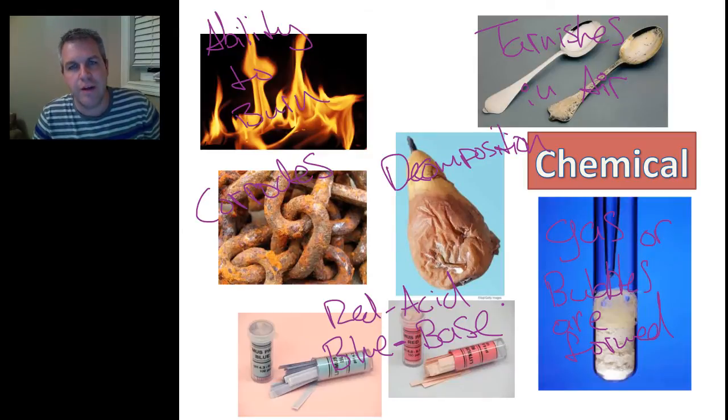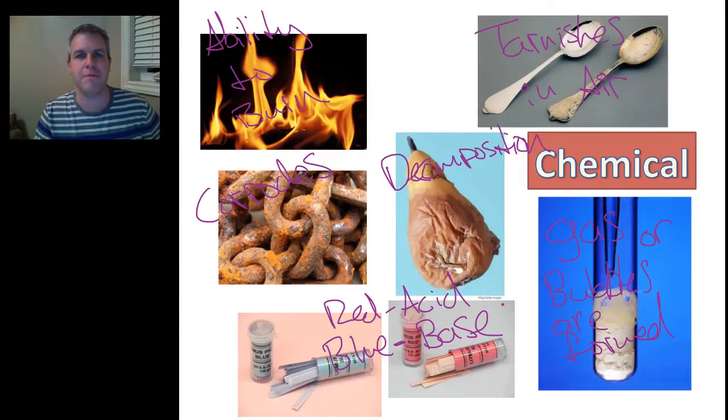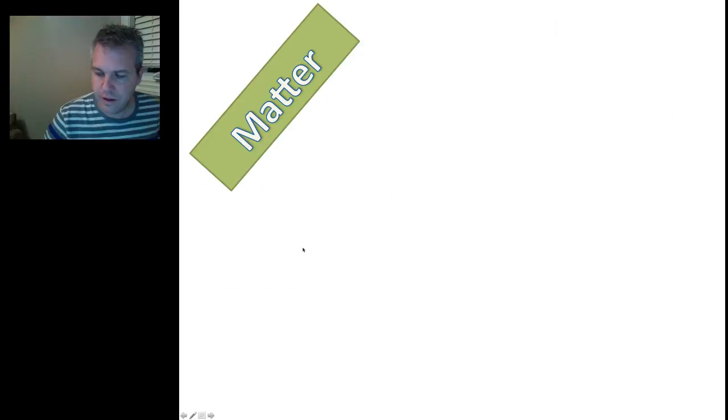So, once again, when we look at chemical properties, it's something that is irreversible. We cannot turn it back. The physical properties that we looked at earlier, those are all reversible. We can turn those all back. We do not change the matter or the chemical makeup of the matter. Whereas chemical property, we're actually changing the chemical makeup of the matter itself.